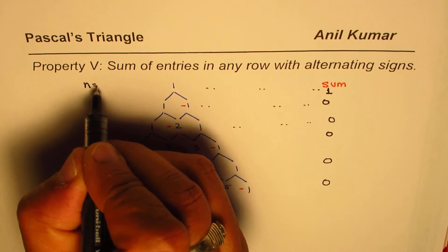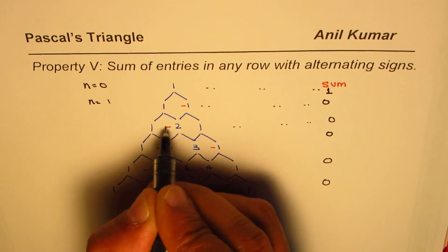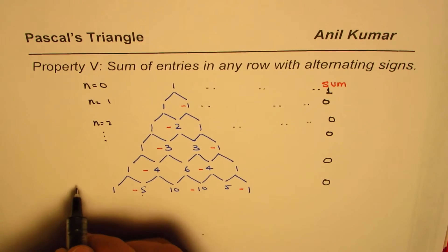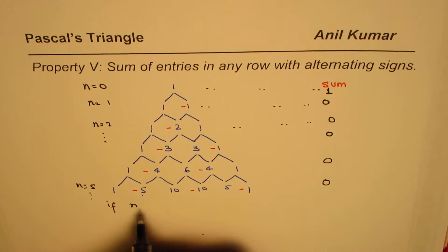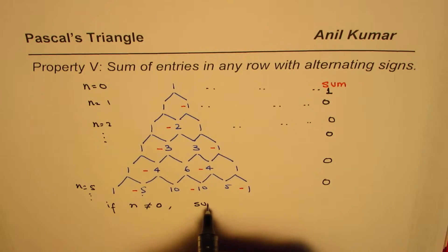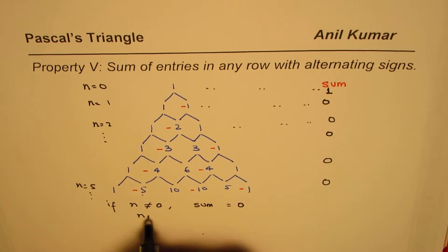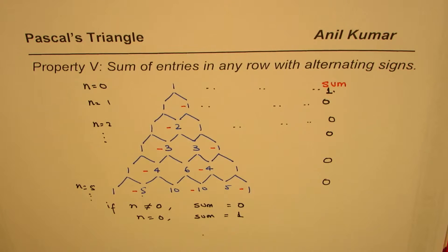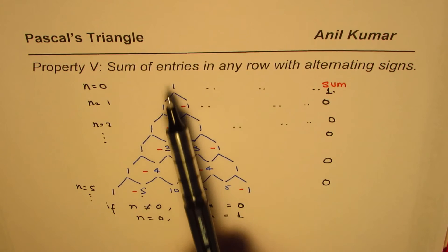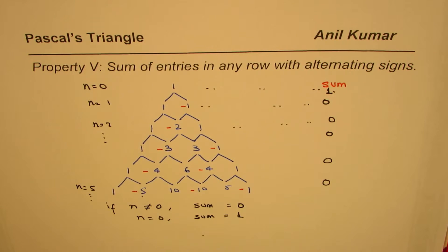So the first case is n equals zero, then n equals one, n equals two, and so on up to n equals five. The result is: if n is not equal to zero, the sum is zero; but if n is equal to zero, the sum is one. So when entries are alternating, the sum is either zero or one — one for the zeroth row, and zero for all other rows.